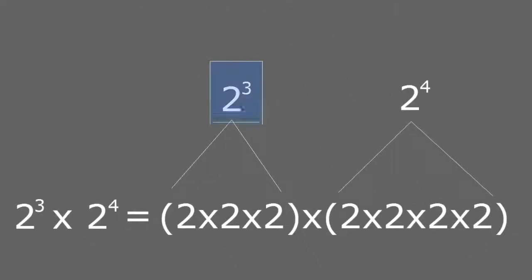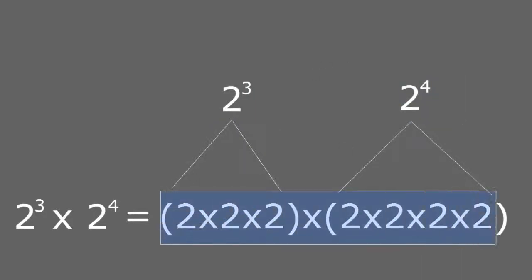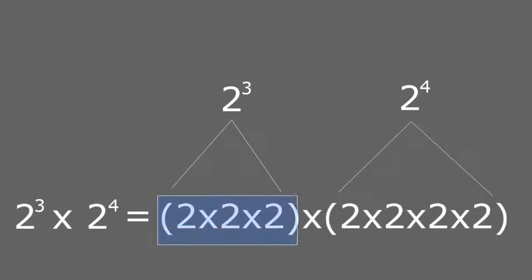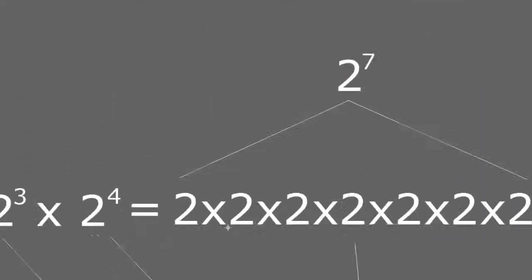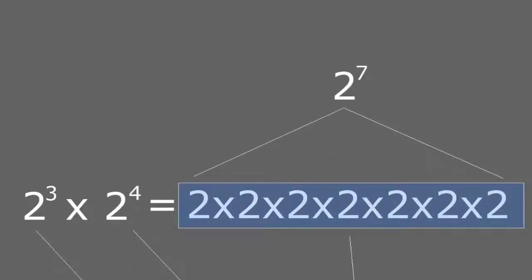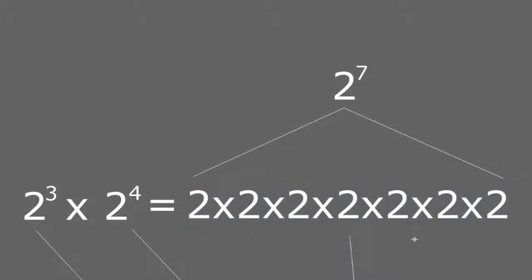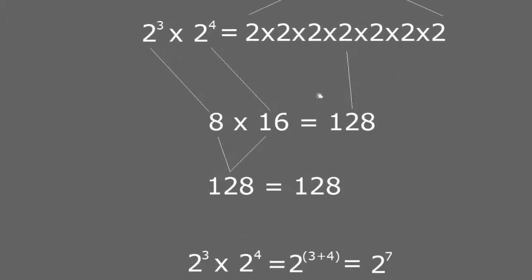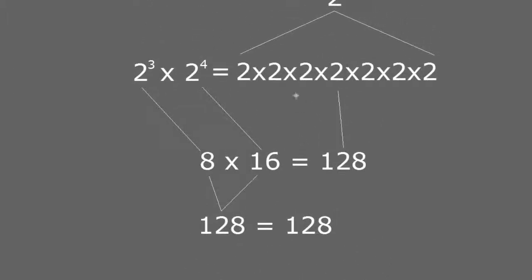So I have to multiply this times this, and it becomes 2 multiplied by itself 3 times by 2 multiplied by itself 4 times. The parentheses are not necessary here, and it just becomes 2 multiplied by itself 7 times. So 2 multiplied by itself 7 times equals 128, and 2 to the power of 7 equals 128.